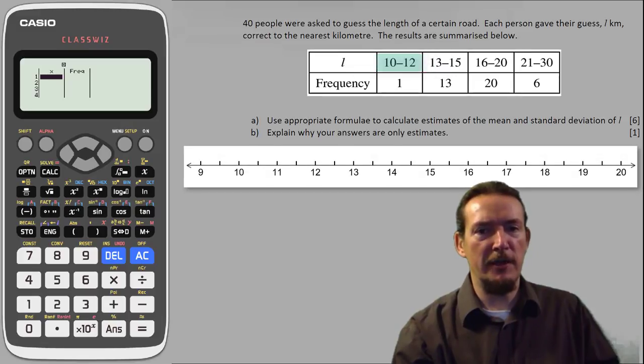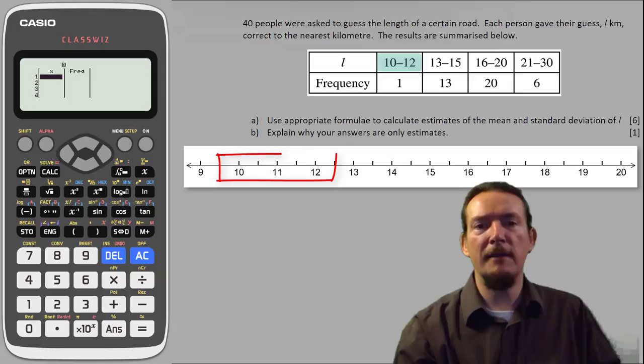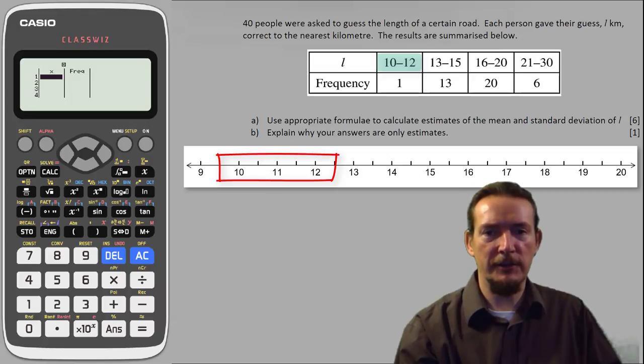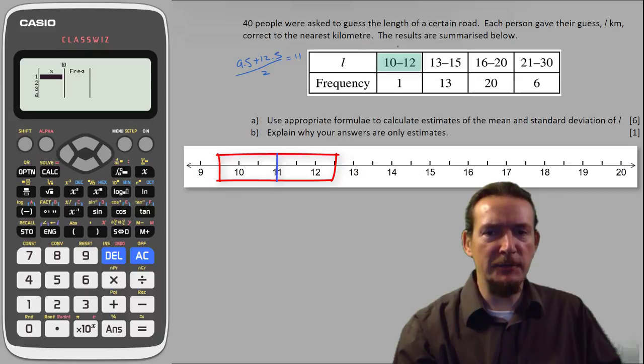So the first group, 10 to 12, actually represents all the values of L between 9.5 and 12.5 kilometres. So the average of these is 9.5 plus 12.5 divided by 2 which gives us 11. Now notice that in this case we get the same result as if we had just added 10 and 12 together.